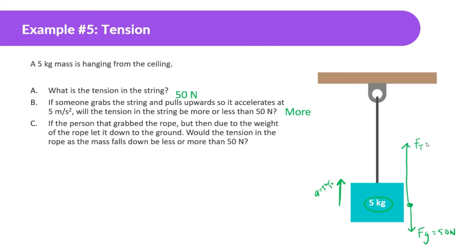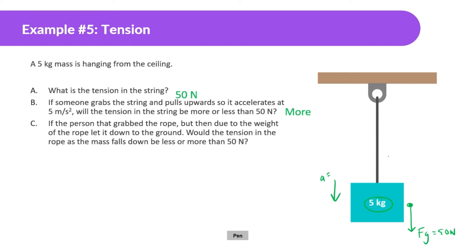Part C: if the person lets the rope down due to the weight, so the mass falls toward the ground, would the tension in the rope as the mass falls be less or more than 50 newtons? Since it's accelerating downwards, that means the force of gravity is stronger than the force of tension holding it up. So the tension would be less. Well, that makes sense, and we'll be doing more problems.